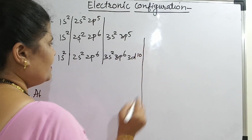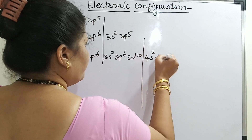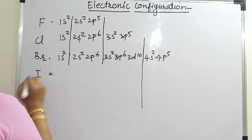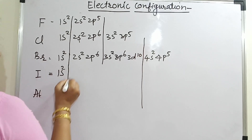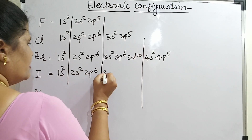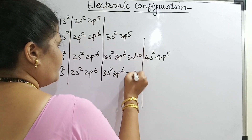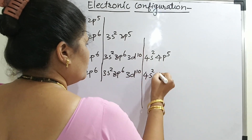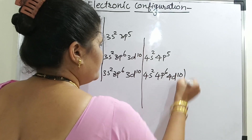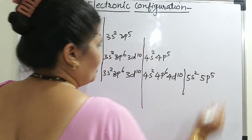Continuing bromine: 4s2 and 4p5. Come to iodine: 1s2, 2s2, 2p6, 3s2, 3p6, 3d10, then 4s2, 4p6, 4d10, and finally 5s2 and 5p5.